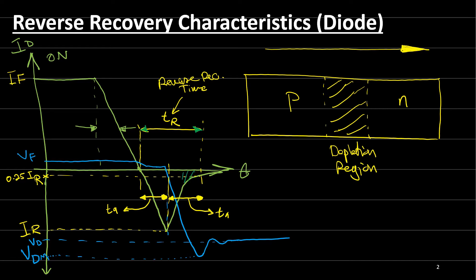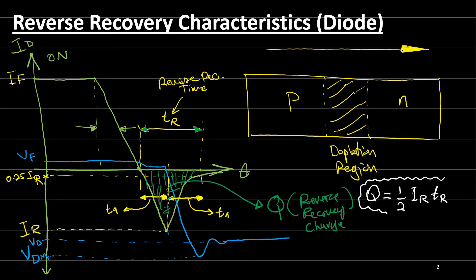And this area here represents the reverse recovery charge. And this reverse recovery charge can be calculated by this equation. The charge Q is equal to half of the current times the time period. The current is equal to IR maximum here, and the time period is TR.